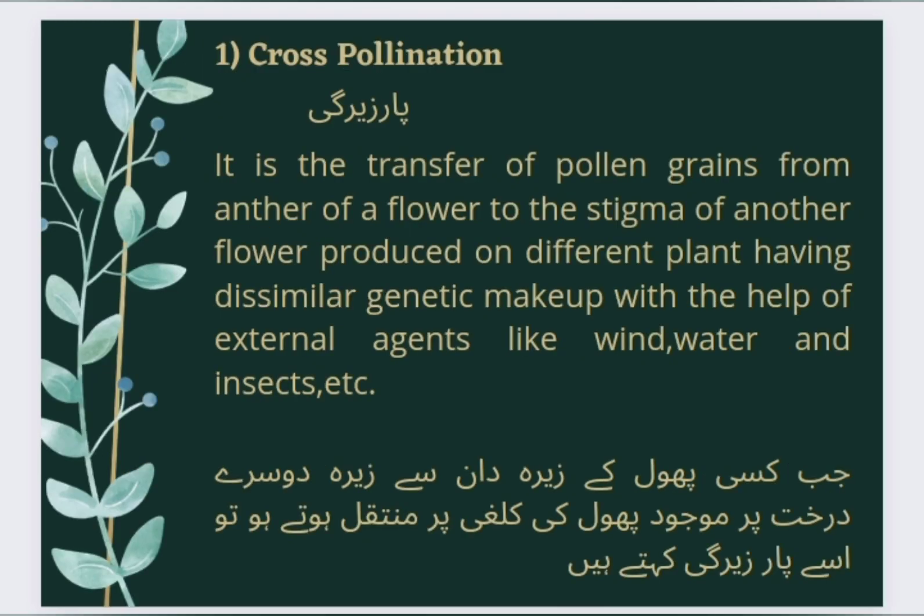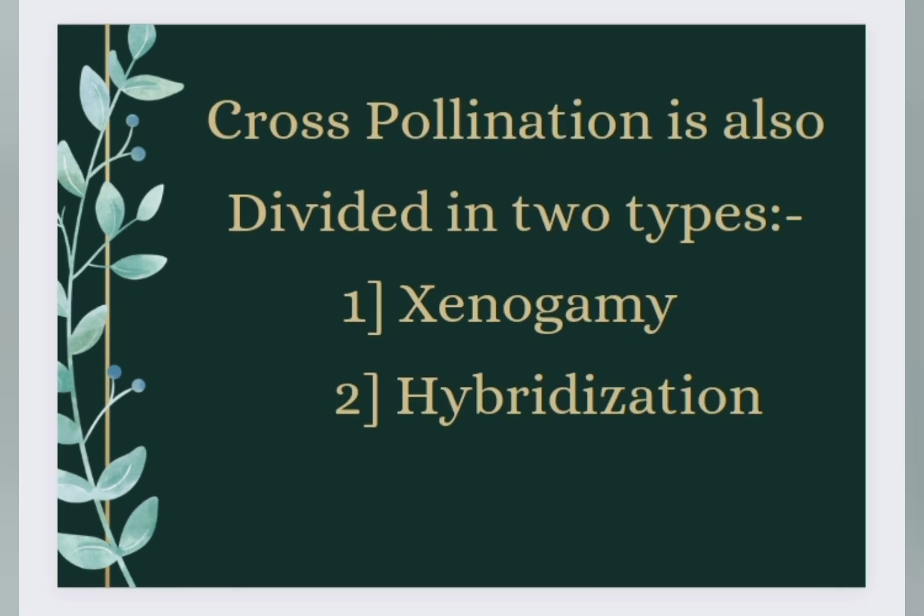Cross-Pollination (Paar-Zeergی): It is the transfer of pollen grains from the anther of a flower to the stigma of another flower produced on a different plant having dissimilar genetic make-up, with the help of external agents like wind, water, and insects.